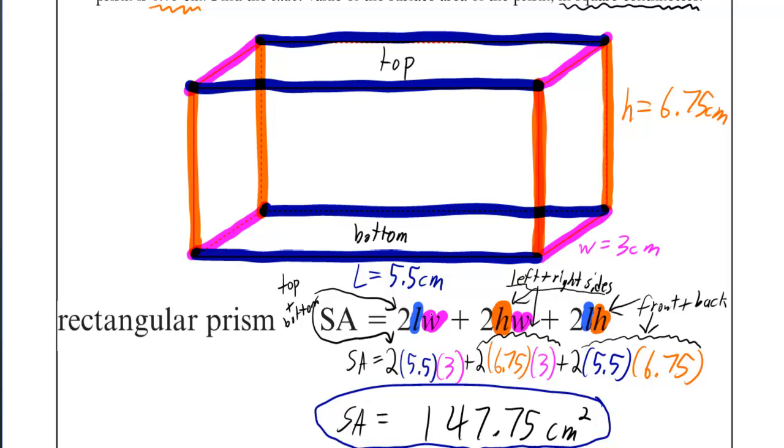And the exact same argument applies for the front and the back. Now the front and the back is the orange paired with the blue. So this rectangle that we see in the front is what I mean when I say the front.